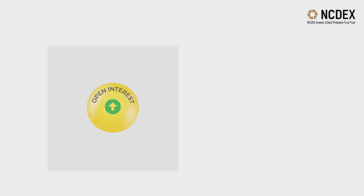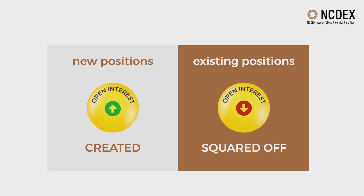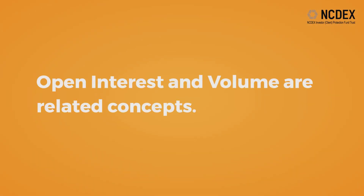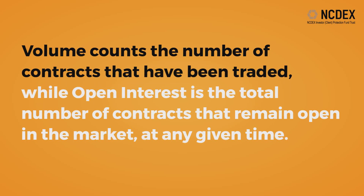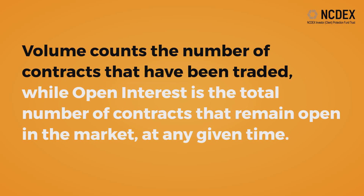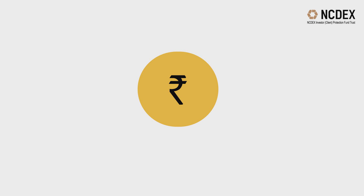Increasing OI indicates new positions being created, and declining OI indicates existing positions being squared off. Open interest and volume are related concepts. One key difference is that volume counts the number of contracts that have been traded, while open interest is the total number of contracts that remain open in the market at any given time. Traders can think of open interest as the cash flowing into the market.